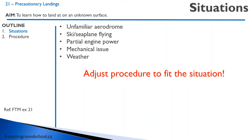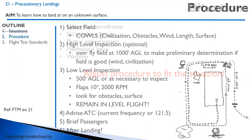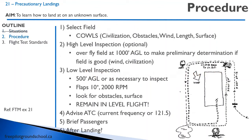With all these situations, it's important that you use your decision-making to adjust the procedure to fit the situation. For example, with partial engine power or an engine loss, you might cut out as much as you can and get on the ground as quickly as possible. Whereas if it's not that urgent, you can just do the whole procedure and take your time.